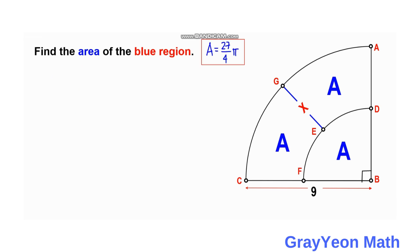So GE being the segment X, this also means that the segment CF is also X. And this segment FB is 9 minus X.